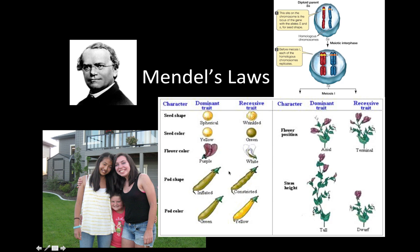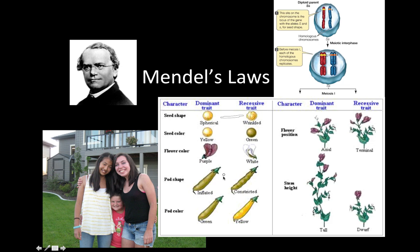He came about most of this stuff through the study of peas. He had a garden where he grew tons of peas, but it wasn't a garden to make a great meal with fresh produce — he was conducting scientific experiments. He'd pay attention to seed shape when he crossbred different pea plants; he'd pay attention to the purple flowers and the white flowers, asking what the results would be, and all these different characteristics he kept track of.